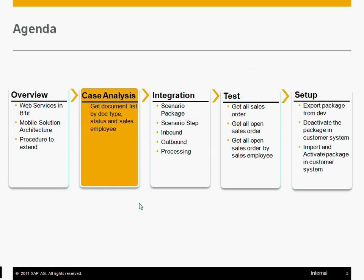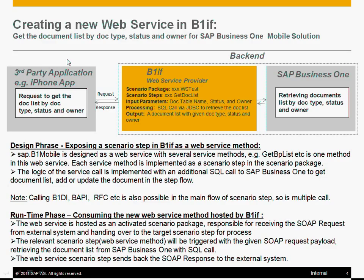Let's have a look at our scenario first. Specifically, I'm going to show you the sample — how we can create a web service interface to get the document list by document type, document status, and by the document owner for Business One. In the design phase, we need to create a new scenario package. Let's say we take the scenario package name as "web service test", and then we need one web service method — let's say we are going to create it as "get doc list".